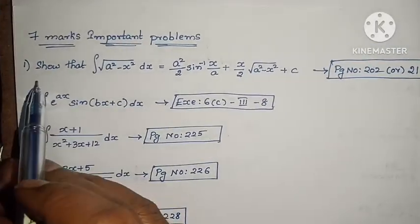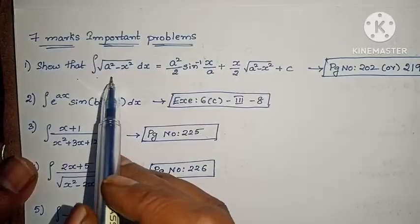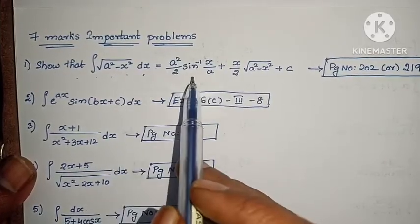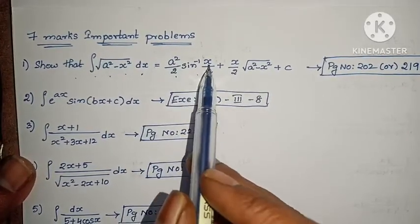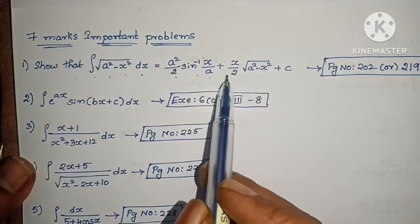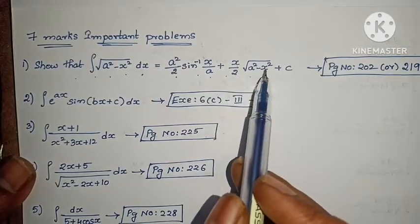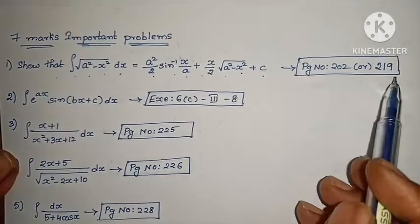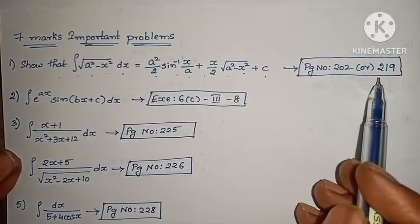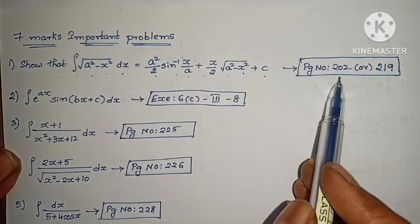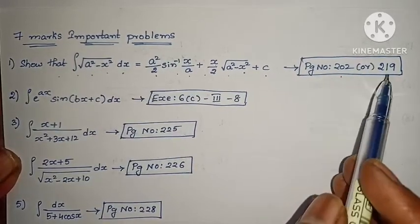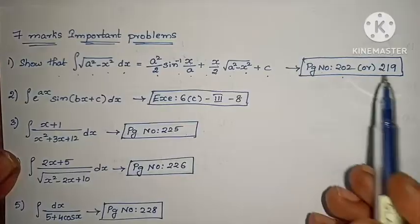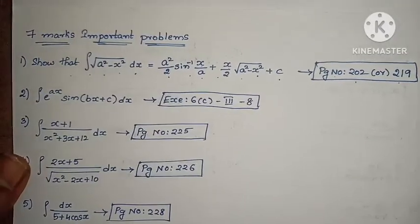First, show that integral of √(a² − x²) dx = (a²/2)·sin⁻¹(x/a) + (x/2)·√(a² − x²) + c. Proofs are on pages 202 and 219 — please refer to those pages.